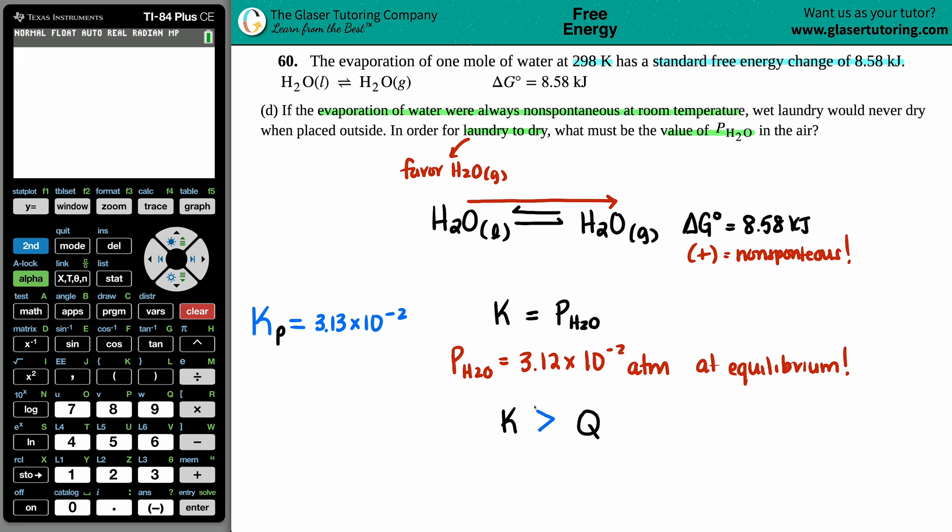Maybe K is greater than Q, or maybe K is less than Q. If you put the Q on the right side, make the arrow...